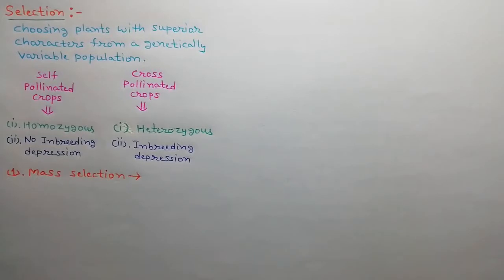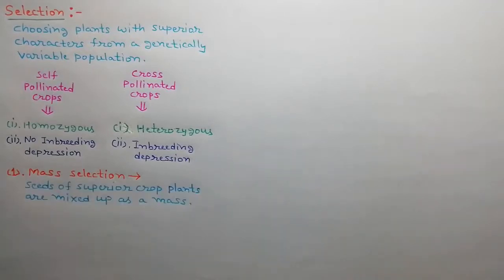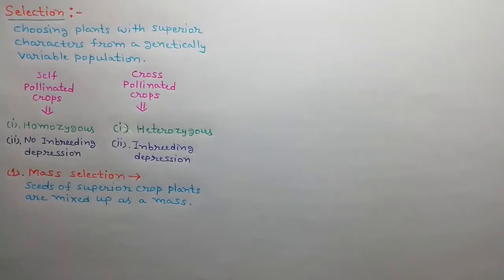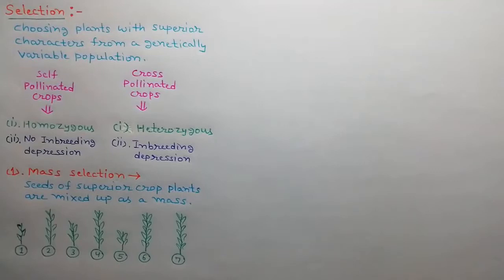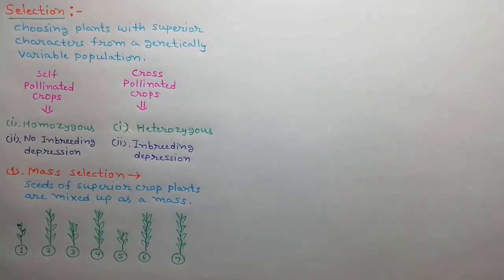The first method of crop improvement in self-pollinated crops is mass selection. In mass selection, plants with similar and superior phenotypes are selected and their seeds are mixed up as a mass to develop a new variety. Suppose there are 7 plants in a row. We observe the plants for superiority and similarity and we found that plant number 2, 4, 6, and 7 are similar and superior.